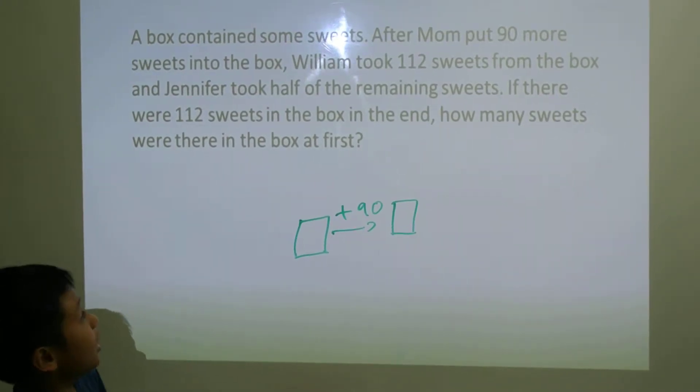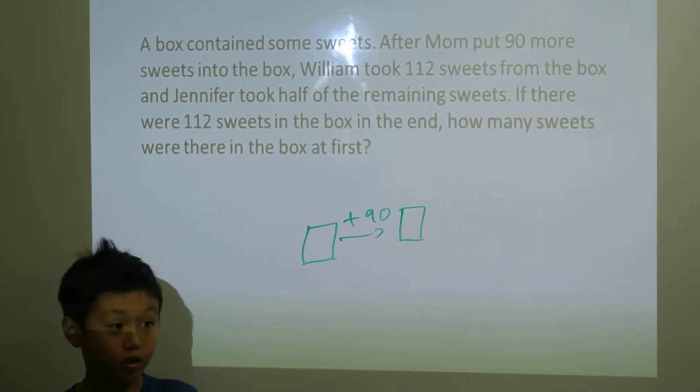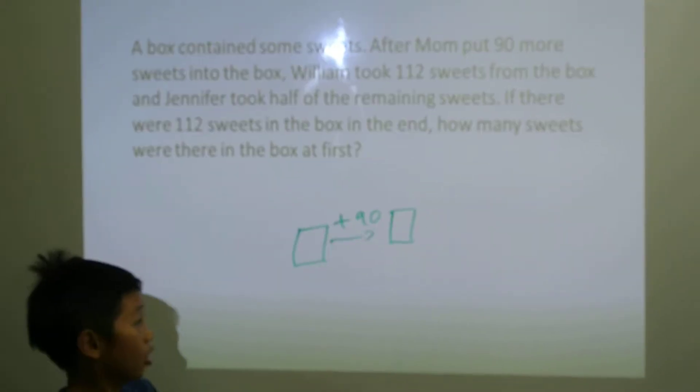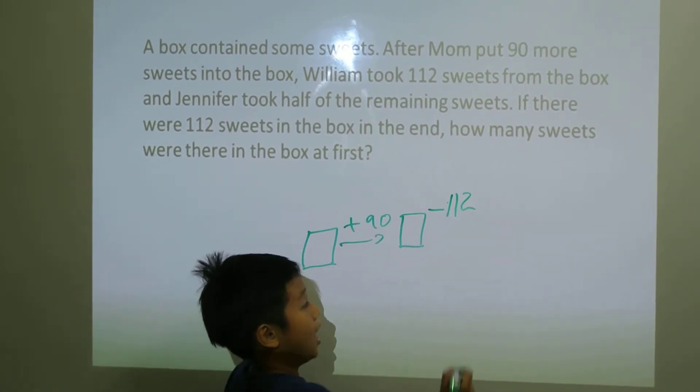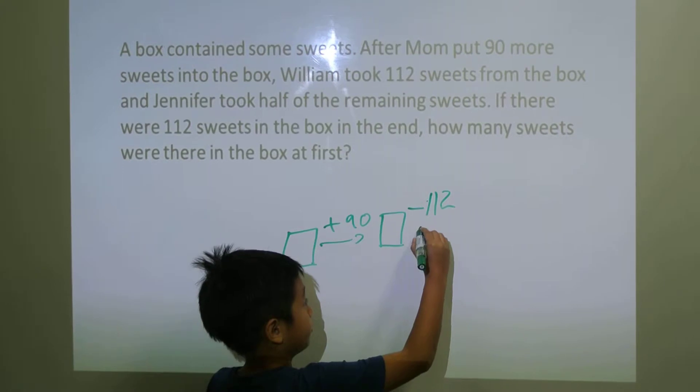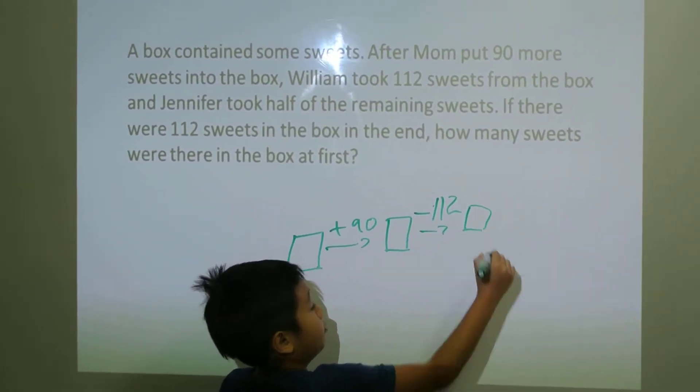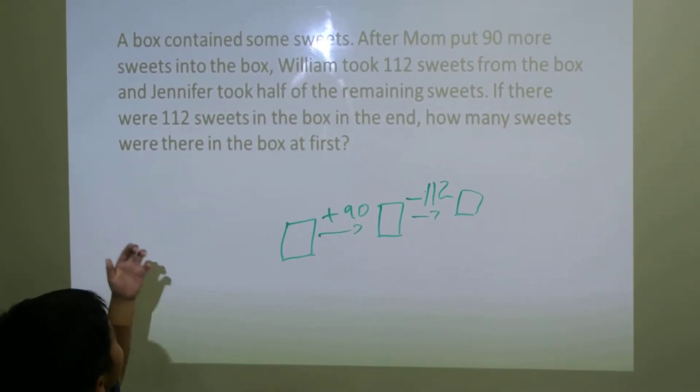So now let's see. William took 112 sweets from the box. So took is minus, so we minus 112. And it's the same thing as an arrow and a box. Box, or we call it a box thing or whatever. Now let's see.